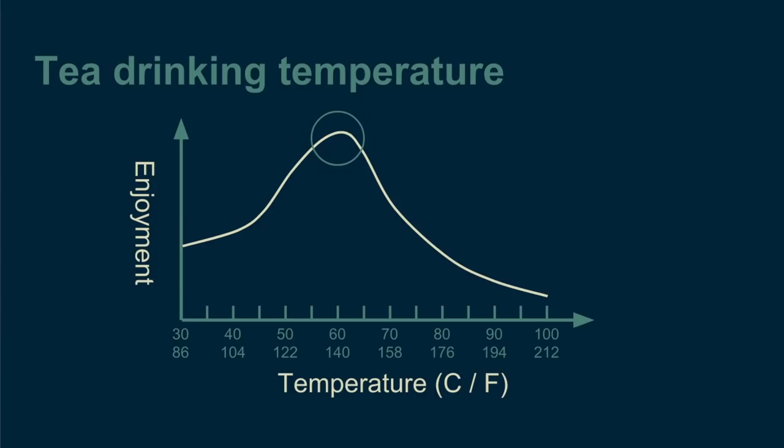This happy medium is what we try to find in optimization. That's what Goldilocks was looking for when she tried Papa Bear's bed and found it too hard, tried Mama Bear's bed and found it too soft, and then tried Baby Bear's bed and found it to be just right.